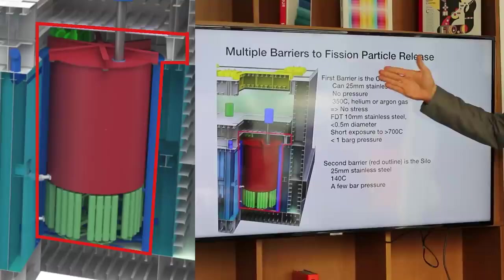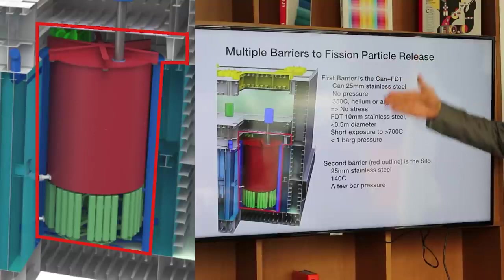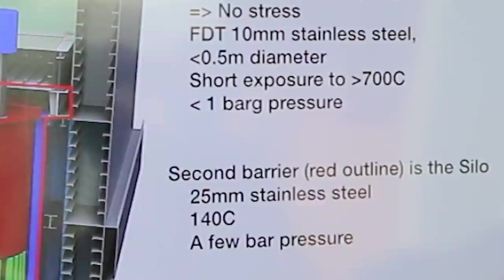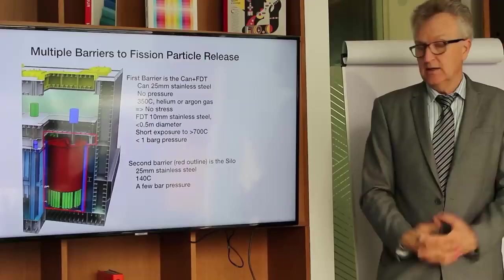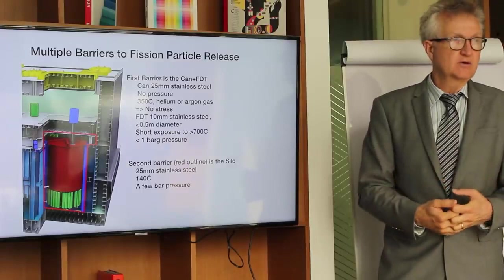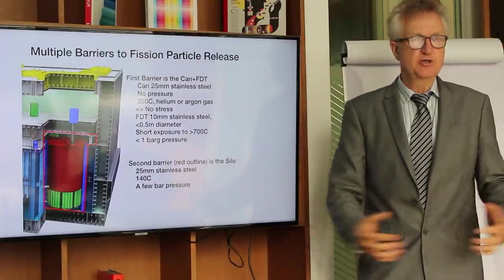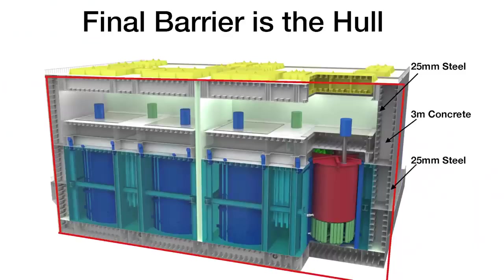Beyond the first barrier, we have a second barrier, which is the steel that's part of the silo wall and the floor that's above it. That's also a gas type barrier. It's at 140 degrees C and a few bars pressure. So it's under no stress as far as steel is concerned. Unlike a light water reactor, if there is an accident and somehow the salt gets to the first barrier, it doesn't push a whole bunch of pressure onto the second barrier. And the final one is the ship hull itself. 25 millimeters of steel, then three meters of concrete, 25 millimeters of steel. So it's a very robust barrier, and it also serves as the barrier against aircraft strike.